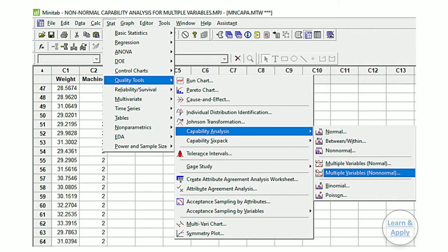To perform non-normal capability analysis for multiple variables, please follow the steps. First, select Stat, Quality Tools, Capability Analysis, and then Multiple Variables Non-normal.